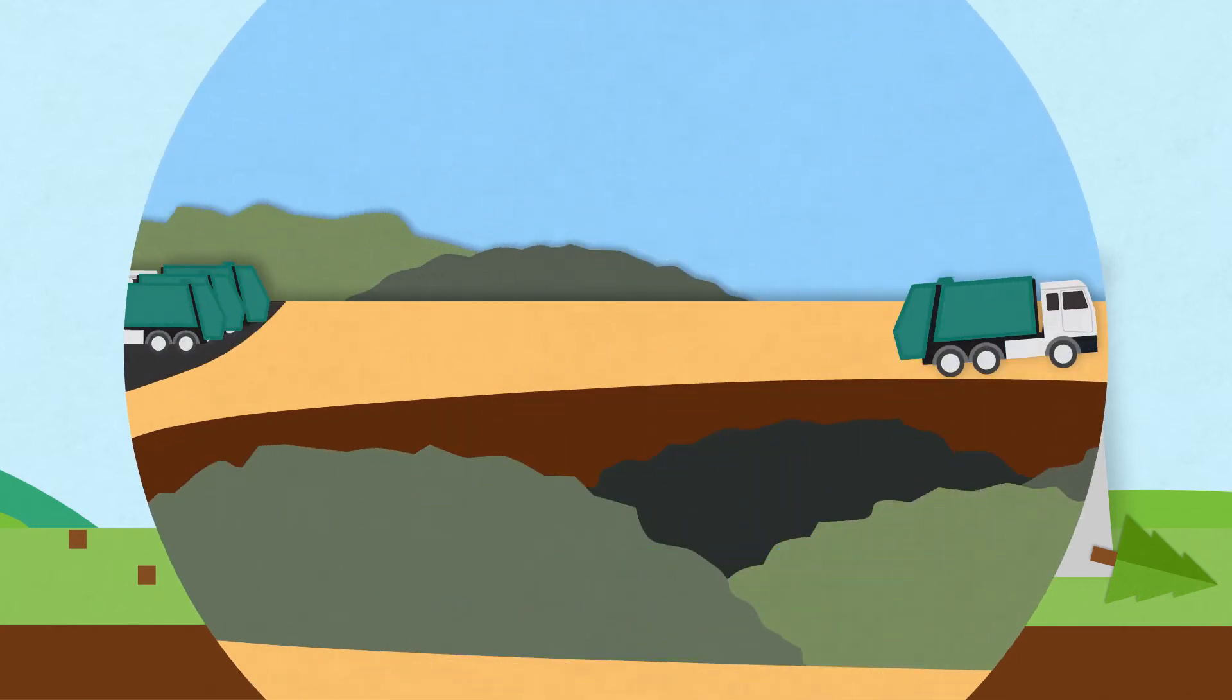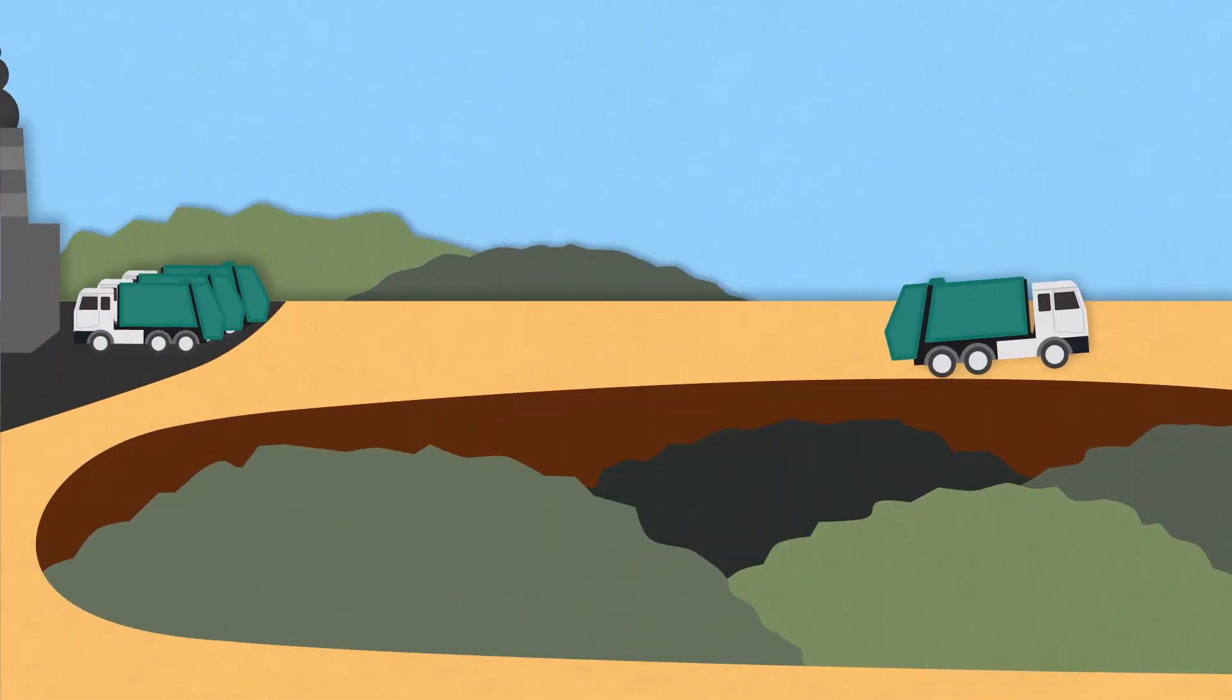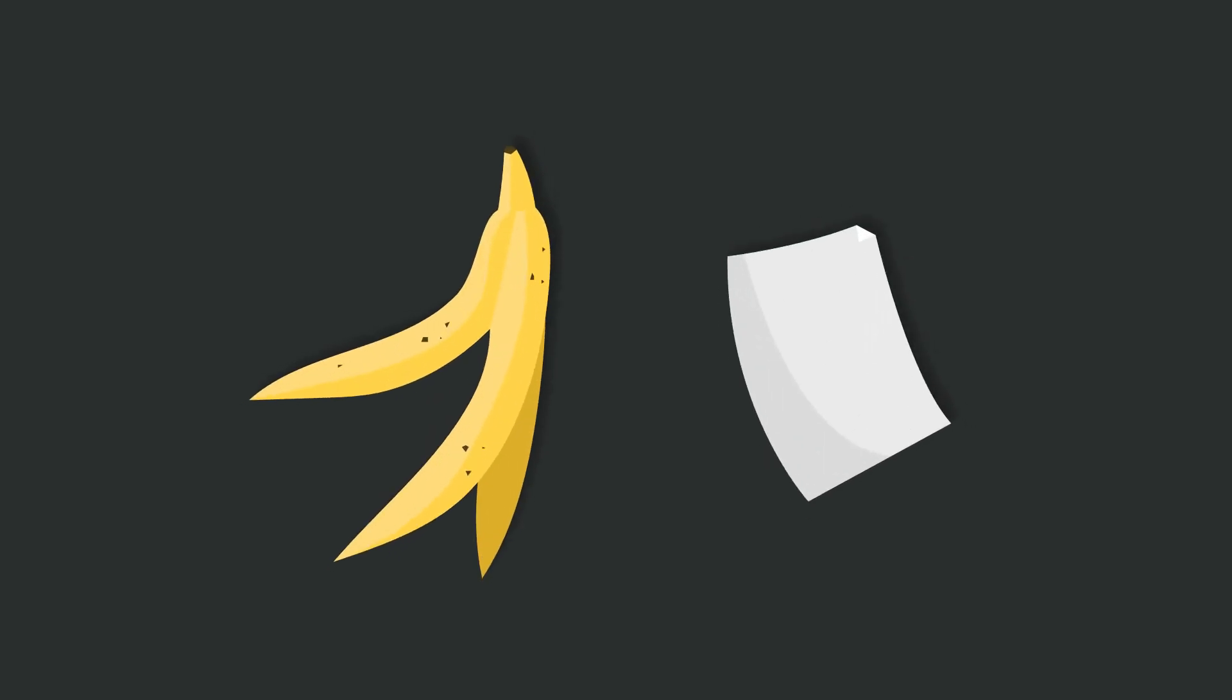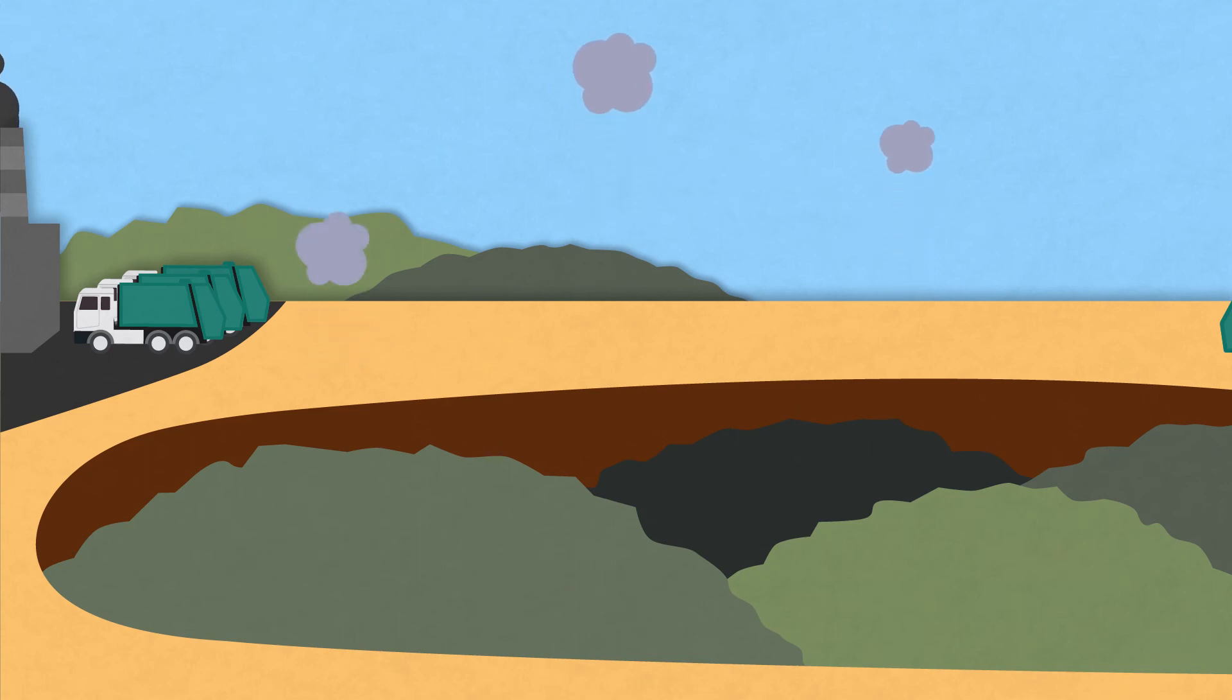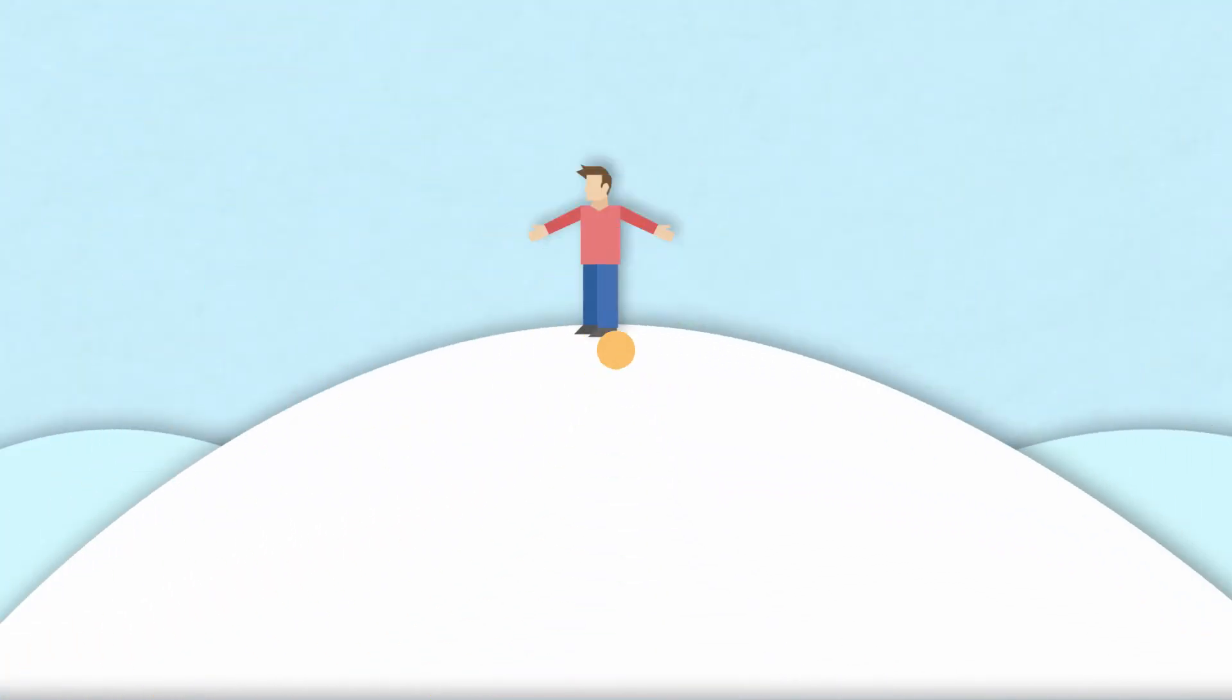The way we manage waste also contributes to climate change. When we dump waste on landfills, bacteria breaks down the organic wastes, such as food and paper, which releases greenhouse gases such as methane and carbon dioxide. So what does all this mean for us?